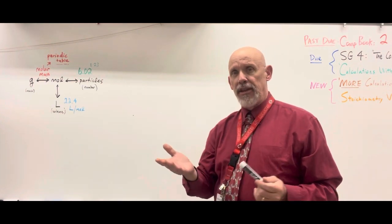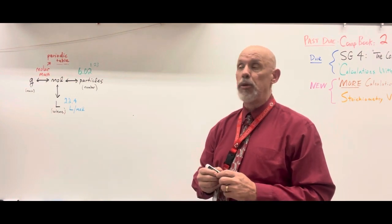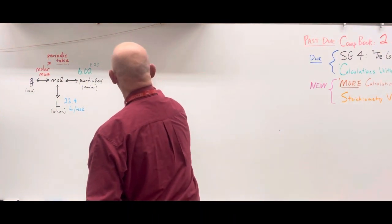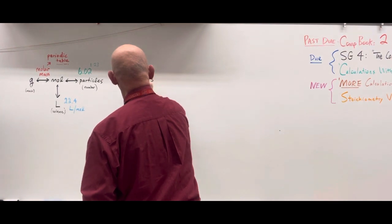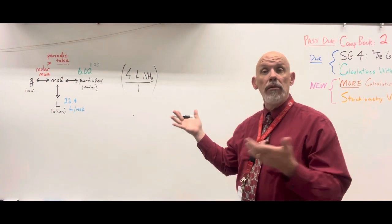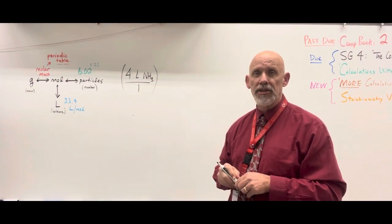So this time let's say that we're going to start off with a certain volume of a gas. We're going to use ammonia. Let's say that we start off with four liters of ammonia NH3. And we want to know, if we have four liters of ammonia, how many molecules of this ammonia gas do we have?